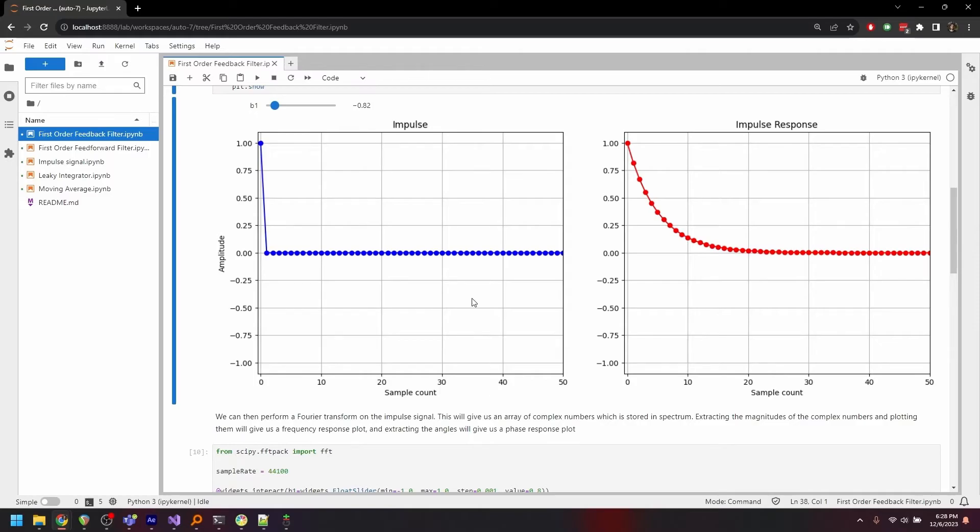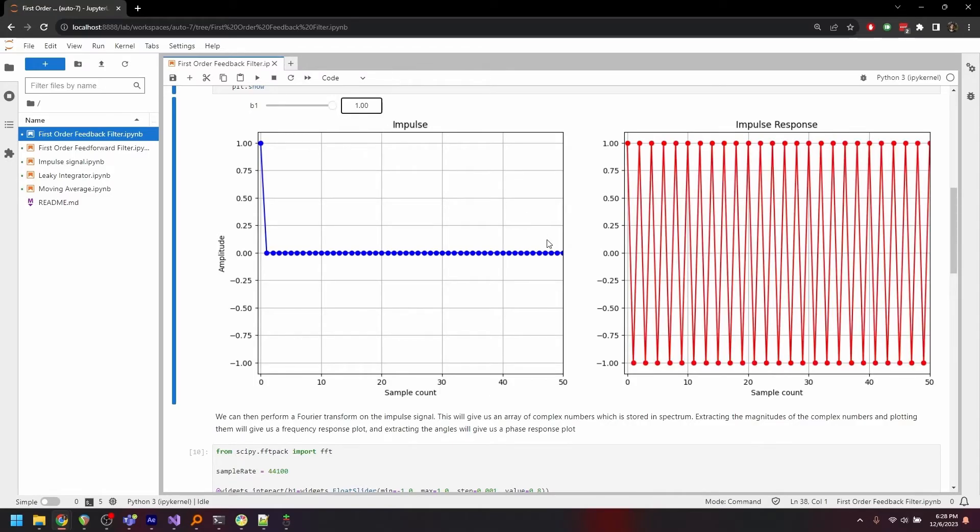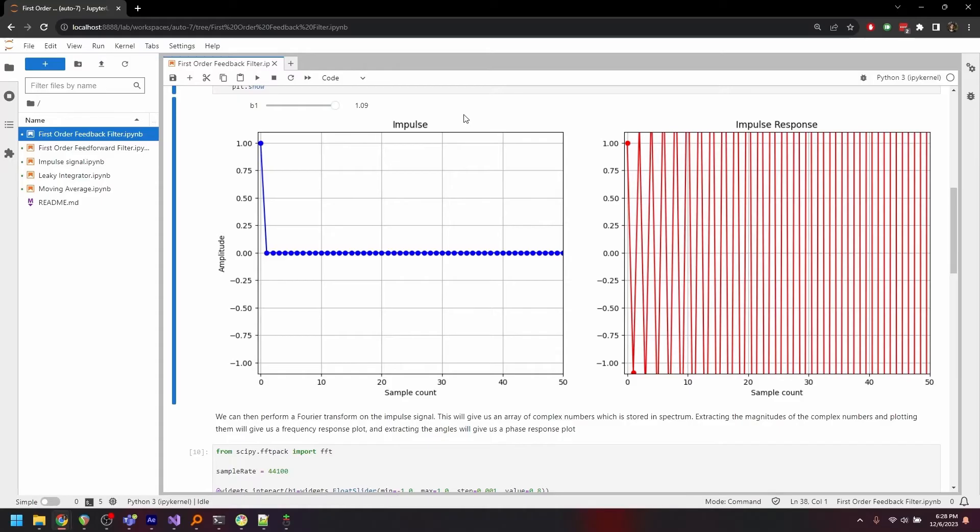As we turn b1 all the way up to 1, the response exhibits a pure oscillatory behavior where the response rings out forever. There are certain specialized use cases for this sort of response, but generally this is already unstable. And any value above 1, and the response grows exponentially and is unbounded, making the filter unusable and unstable.